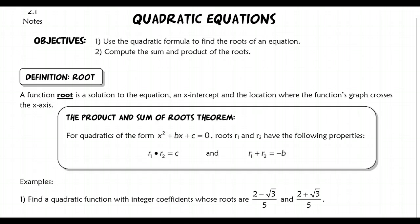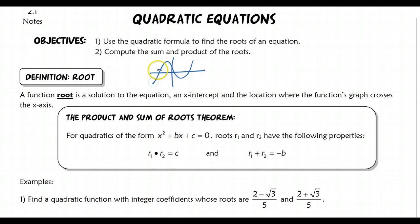I first just want to start off with the definition of a root. We've been over this before, but a function's root is a solution to the equation. It's an x-intercept, and it's the location where the function's graph crosses the x-axis. So for example, this would have three real roots here. The graph of this function here would have three real roots.